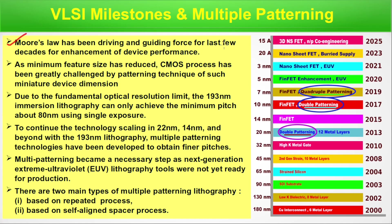Moore's law has been the driving and guiding force for the last few decades for enhancement of device performance. As minimum feature size has reduced, the CMOS process has been greatly challenged by the patterning technique for such miniature device dimensions — because it's something like trying to draw a thinner line with a wider brush. The light used has a wavelength of 193 nanometer, yet it's being used for transferring feature sizes which are a fraction of it. Due to the fundamental optical resolution limit, the 193 nanometer immersion lithography can only achieve a minimum pitch of about 80 nanometer using single exposure.